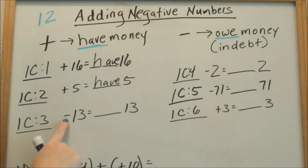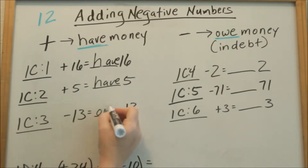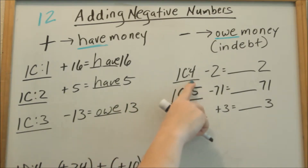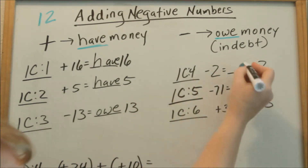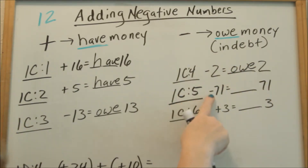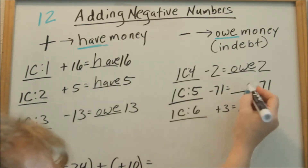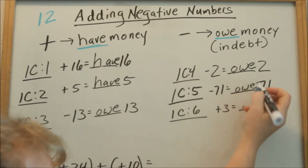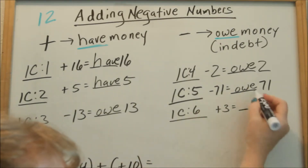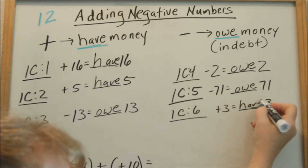Number 3 has a negative sign in front of the 13, so this means negative 13. Negative means you owe — you're in debt. Number 4, negative 2, so negative means you owe 2. Number 5, negative 71 — negative means you owe or you're in debt, so you owe 71. Number 6, positive 3 — positive means you have, so you have 3.